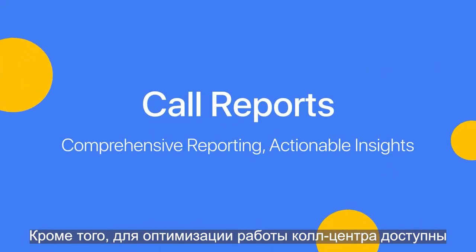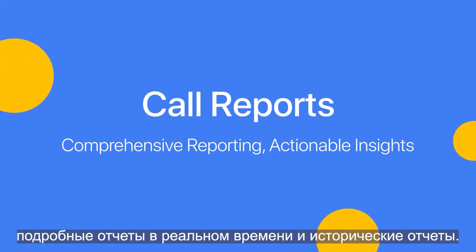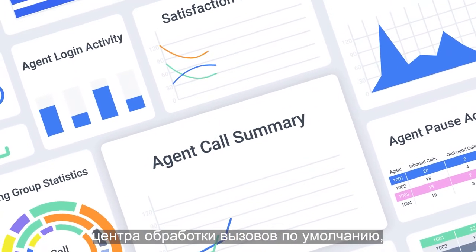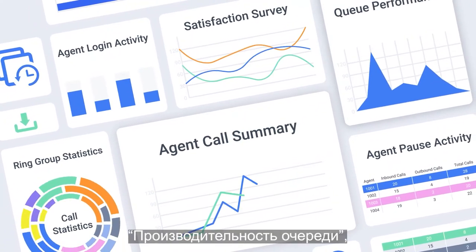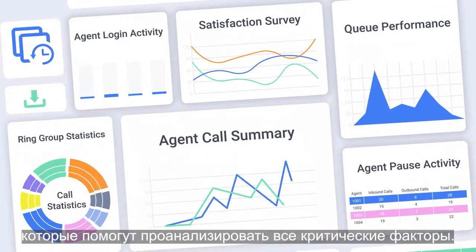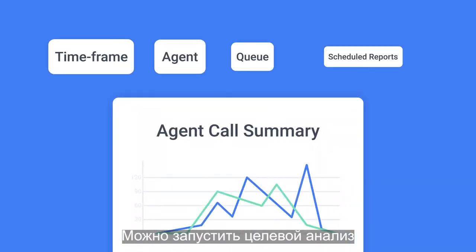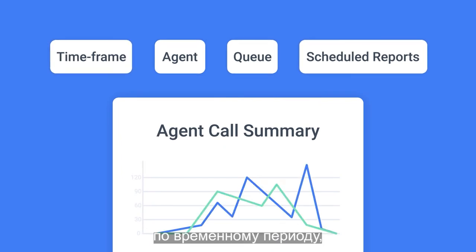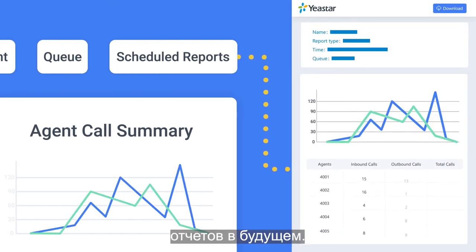Plus, comprehensive real-time and historical reports are also available for your call center optimization. There are predefined call center reports, like agent call summary, queue performance, satisfaction survey, and five more to help you analyze every critical factor. You can also run targeted analysis based on custom time frame, agent or queue selection, and schedule reports to be run periodically in the future.